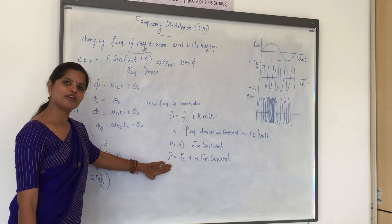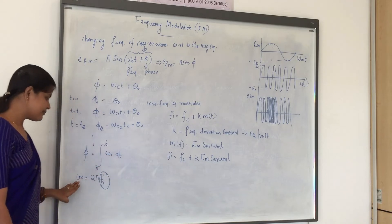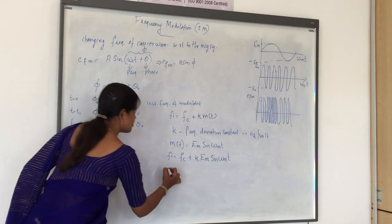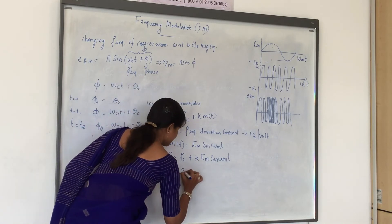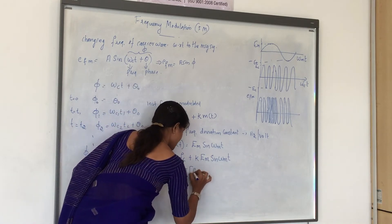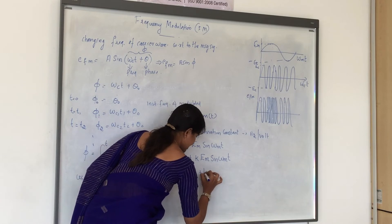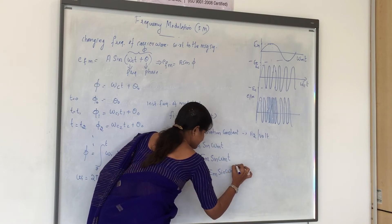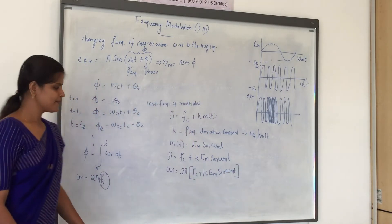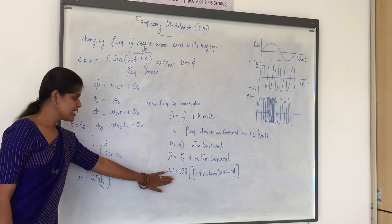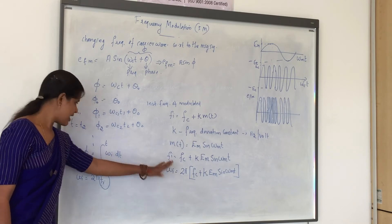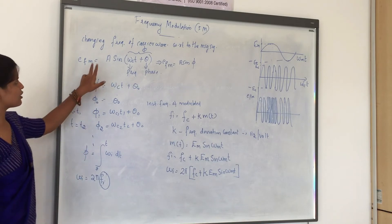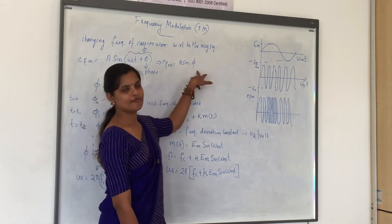We have found the formula for fi. Using fi we can find the formula for ωi, the angular frequency: ωi = 2π(FC + K·Em sin(ωmt)). Now that we know the formula for ωi, we substitute it to find phi — the total angle of the modulated wave.